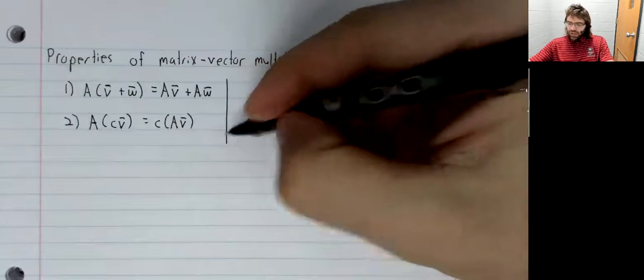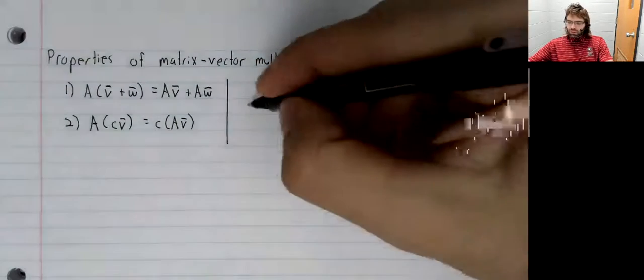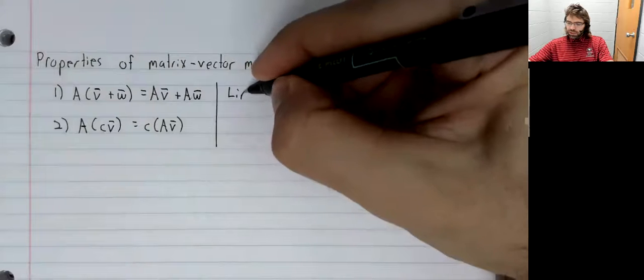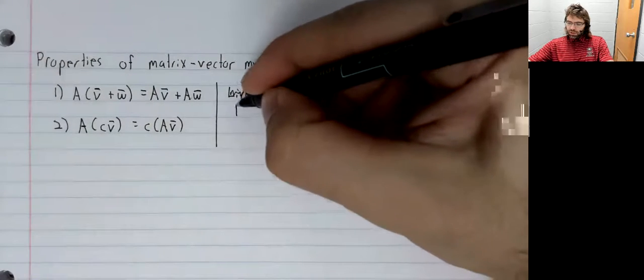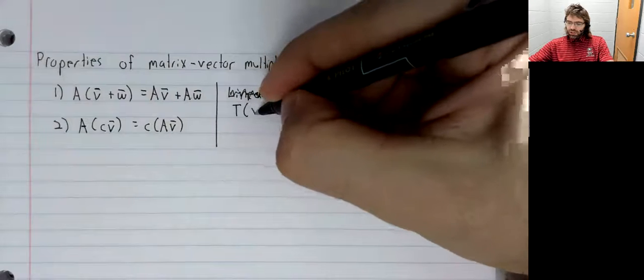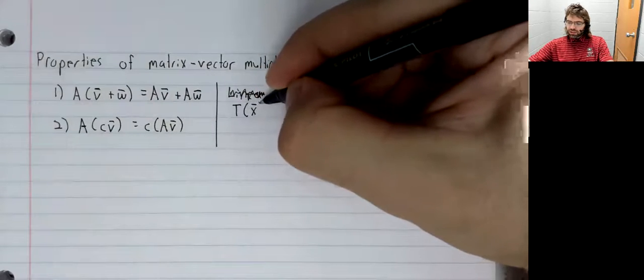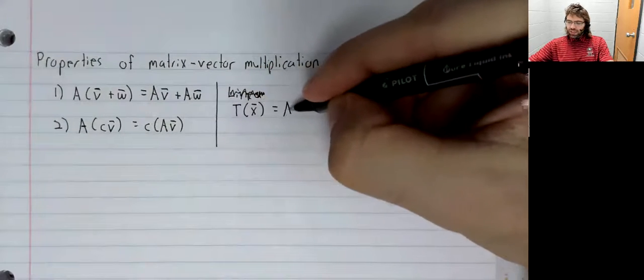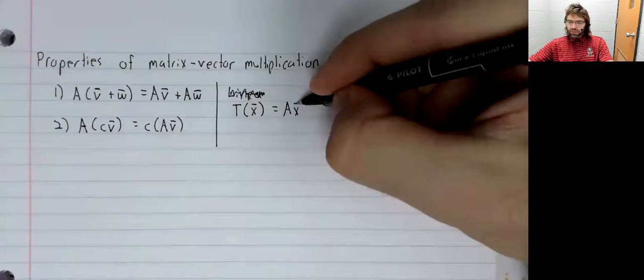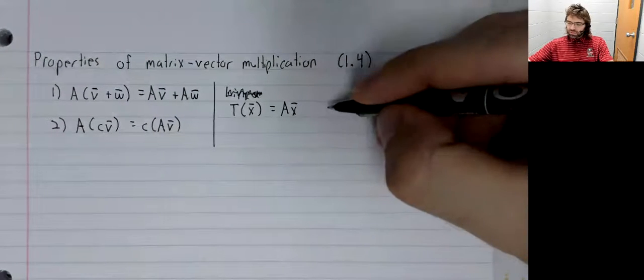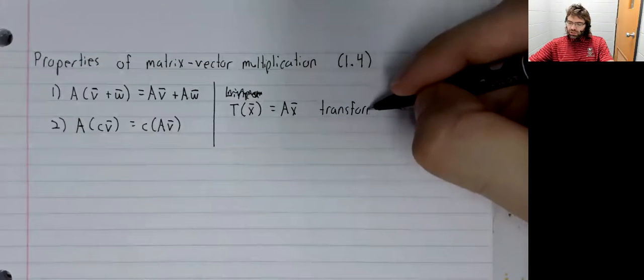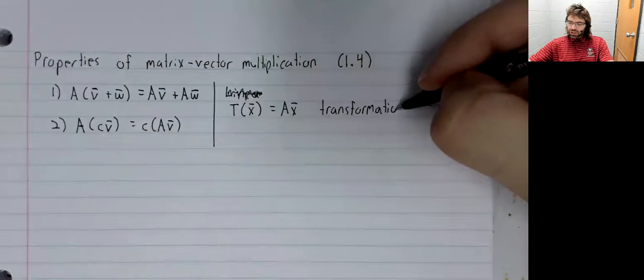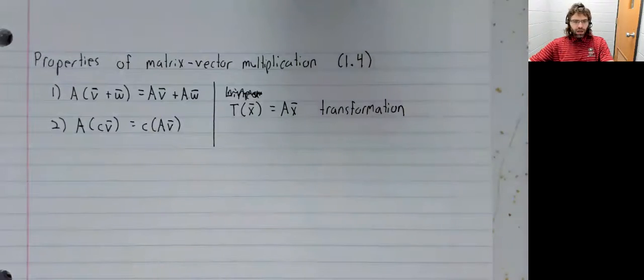We have now made the observation that T(x) equals A times x is a transformation from R^n to R^m.